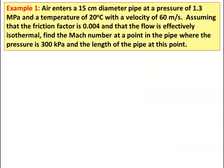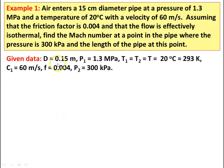Example number 1: air enters a 15 centimeter diameter pipe at a pressure of 1.3 mega Pascal and a temperature of 20 degree Celsius with a velocity of 60 meters per second. Assuming the friction factor is 0.004 and the flow is effectively isothermal, find the Mach number at the point where pressure is 300 kilo Pascal and the length of the pipe at this point. Given data: diameter 0.15 meter, P1 = 1.3 mega Pascal, T1 = T2 = T = 293 Kelvin, C1 = 60 m/s, friction factor F = 0.004, P2 = 300 kilo Pascal.